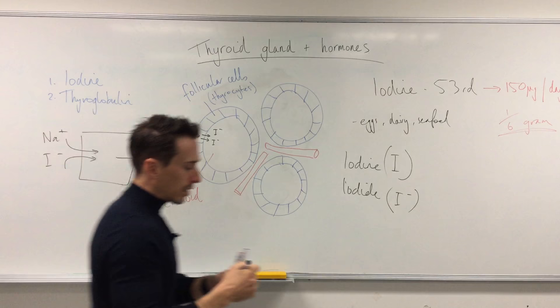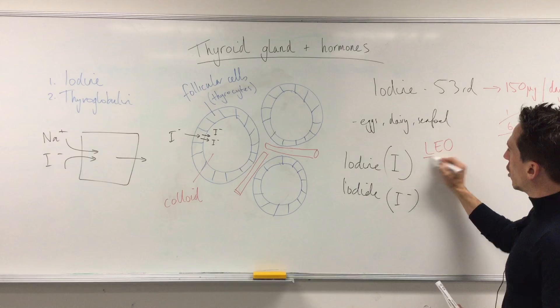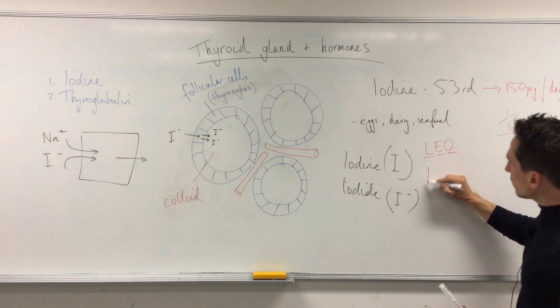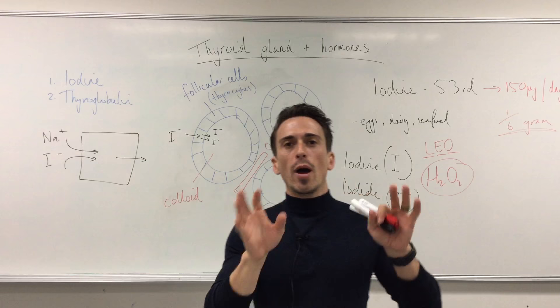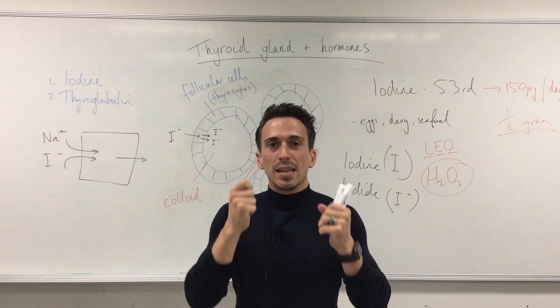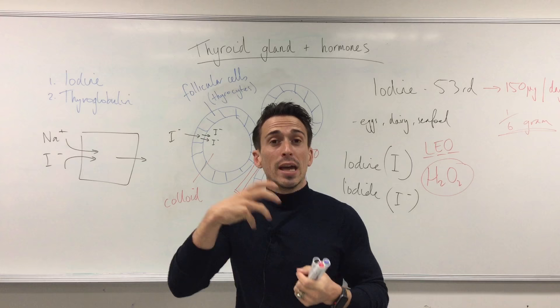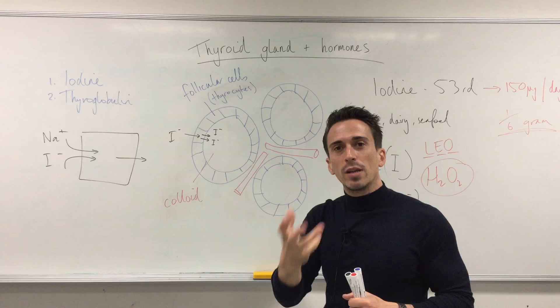Once iodide is in the colloid, it needs to be oxidized — meaning it loses electrons. Iodide is oxidized by hydrogen peroxide (H₂O₂). Even though our body produces these oxidative species, in the right amounts they are necessary for health and immune function. Here, hydrogen peroxide is used to oxidize iodide, making it available and ready for use.